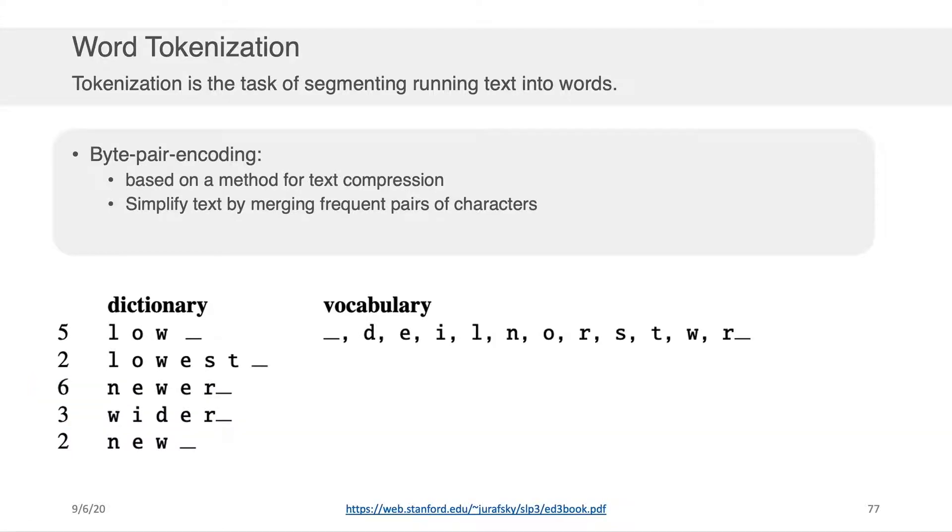So what byte-pair encoding tells us to do is once we've identified what this most common pair is, we merge those two characters together and we add them to our vocabulary. So what this means is that we no longer just have an r character, but we're going to treat this r underscore as though it's one character completely on its own. Okay, great.